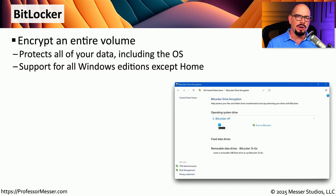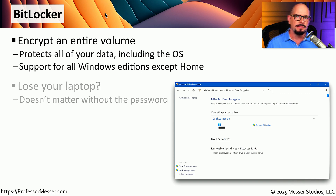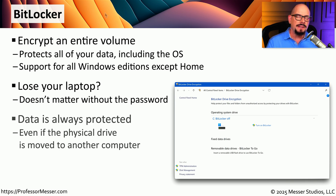One of the things that security professionals are always concerned about is someone gaining access to the data on your storage drive — especially true with laptops and mobile devices that can be taken anywhere and can be lost or stolen. One of the ways you can prevent somebody from gaining access to that data is to use full disk encryption, or FDE. In Windows, full disk encryption is enabled through BitLocker. BitLocker will encrypt an entire volume, including the operating system, all of your personal files, and anything else stored on that volume. This means if you lose your laptop and somebody gains access to the storage device, they would not be able to access anything because all of the contents have been encrypted — even if they remove your hard drive or SSD and plug it into a different computer.